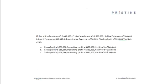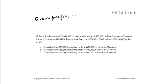Let us take the first question. If a firm's revenue is 20 lakh dollars, the cost of goods sold is fifteen lakh dollars, the selling expenses is one lakh dollars, the interest expenses fifty thousand dollars, administrative expenses fifty thousand dollars, dividends paid is one lakh dollars, and tax rate is 20 percent, then I have to find the gross profit as well as the operating profit.